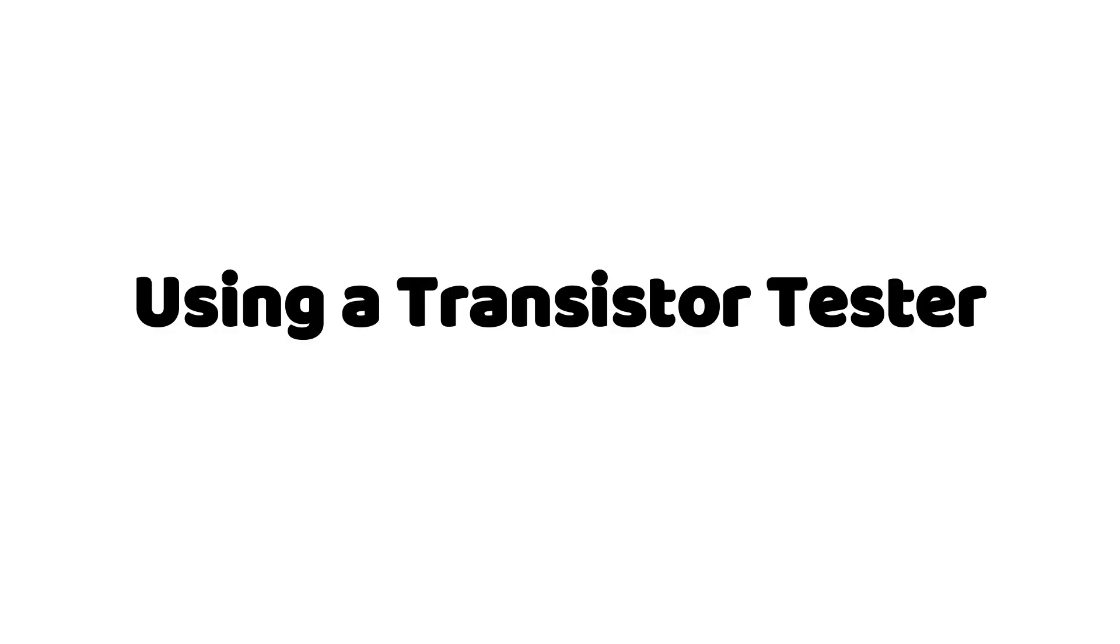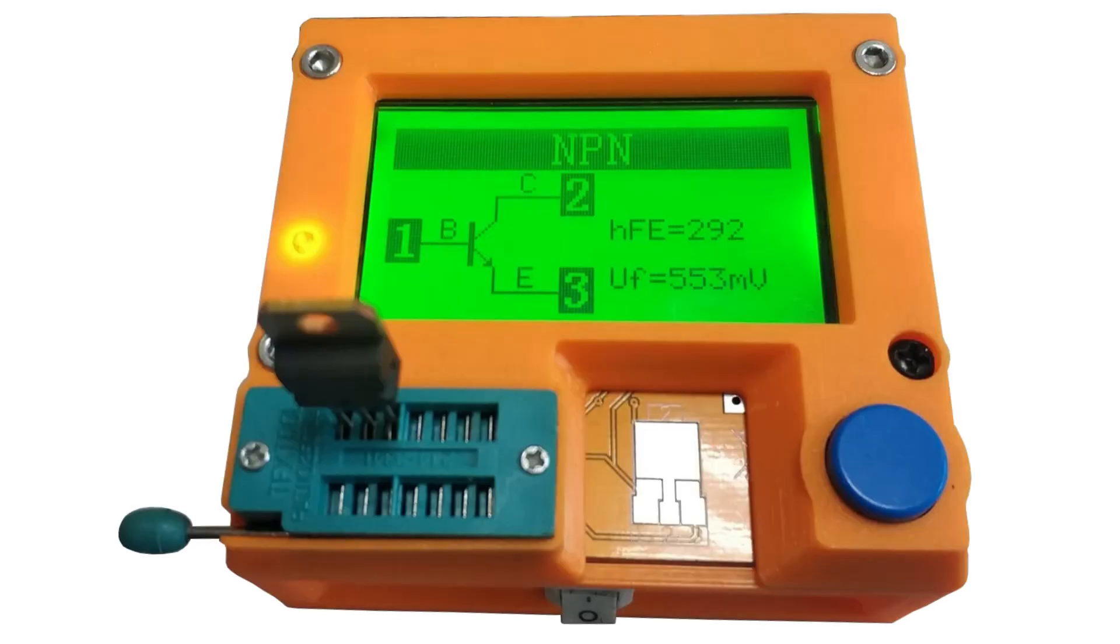Using a transistor tester. If you have a component tester like LCRT4 tester, just insert the transistor, press test, and it will show type and pin out clearly on the screen.